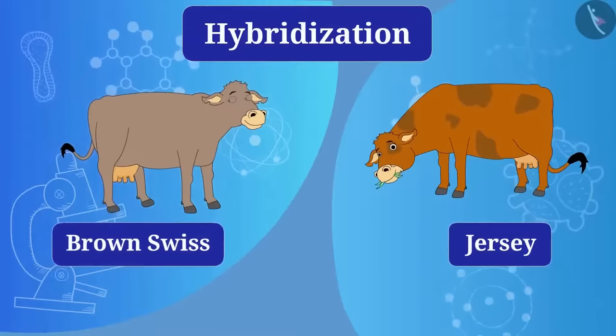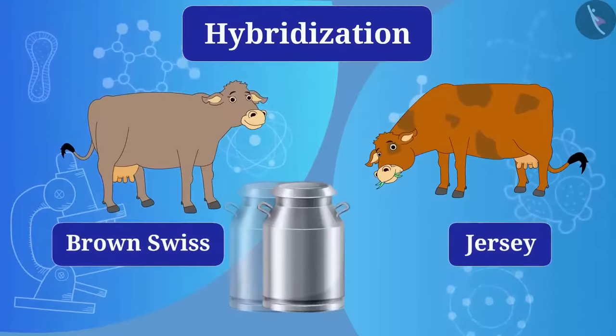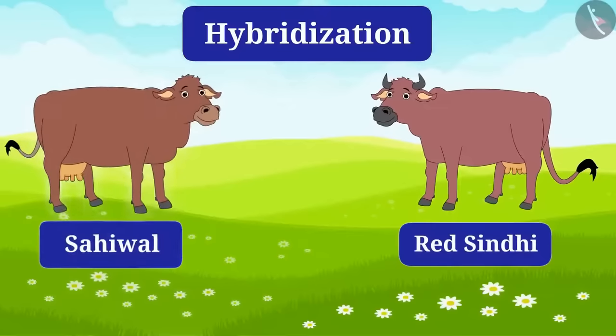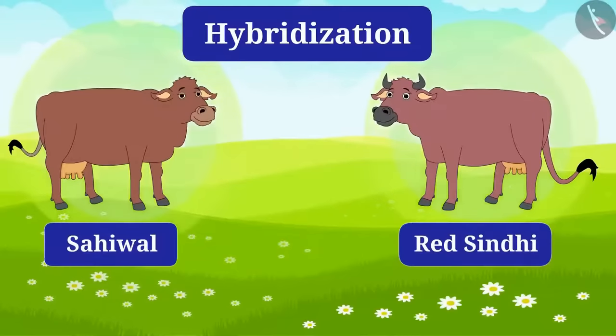Jersey and Brown Swiss are the species with high lactation period. And Red Sindhi and Sahiwal are the species with high immunity.